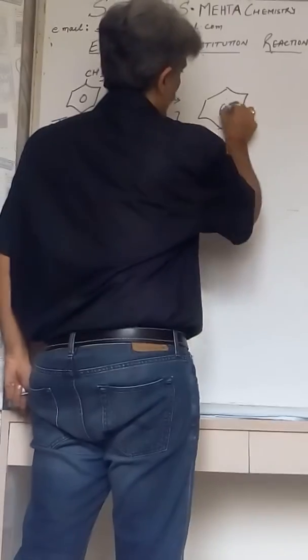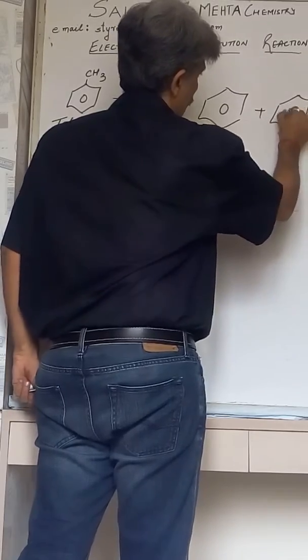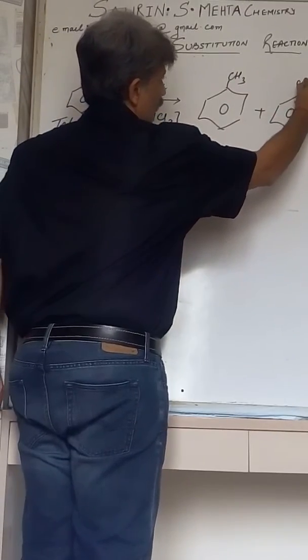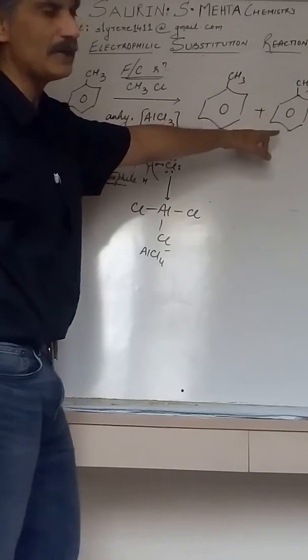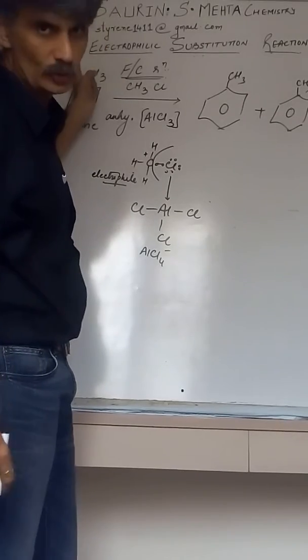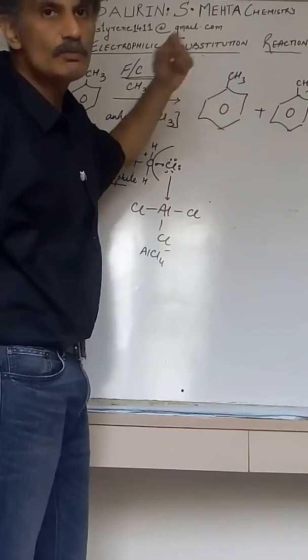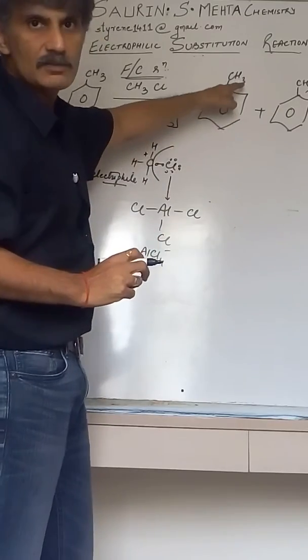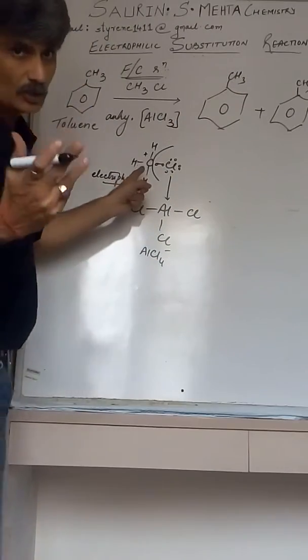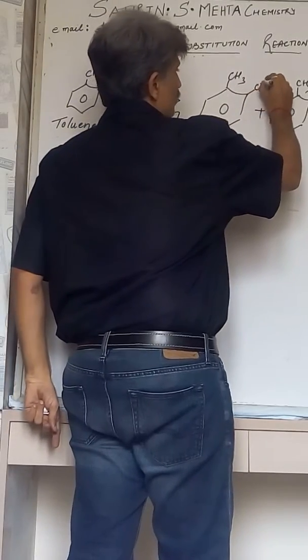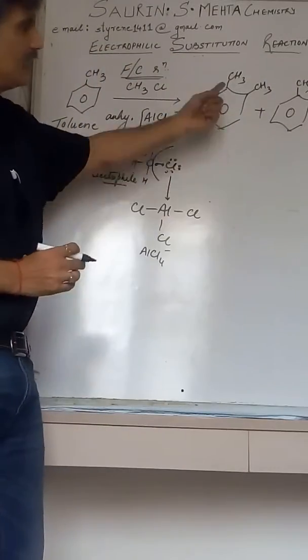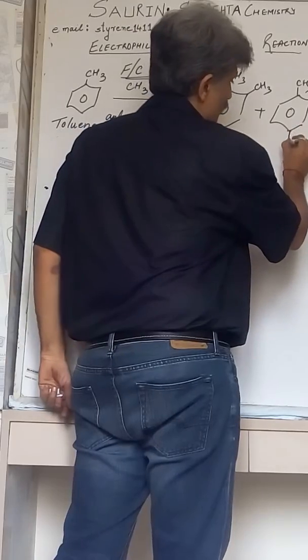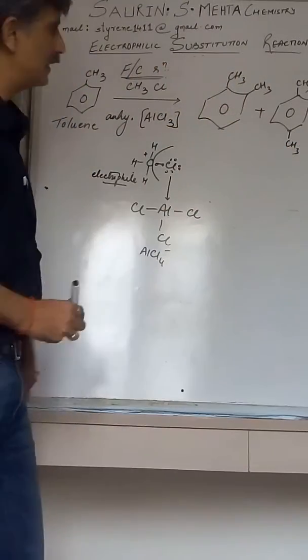This is toluene I am showing again. Now the incoming group wants to get on ortho and para because the group is directing to ortho and para. What happens - the H bonded to the carbon leaves the carbon leaving its electron on carbon. Carbon becomes electron rich, this methyl group is electron poor, and as a result the electron rich and electron poor combine together, forming a bond between carbon and methyl group.